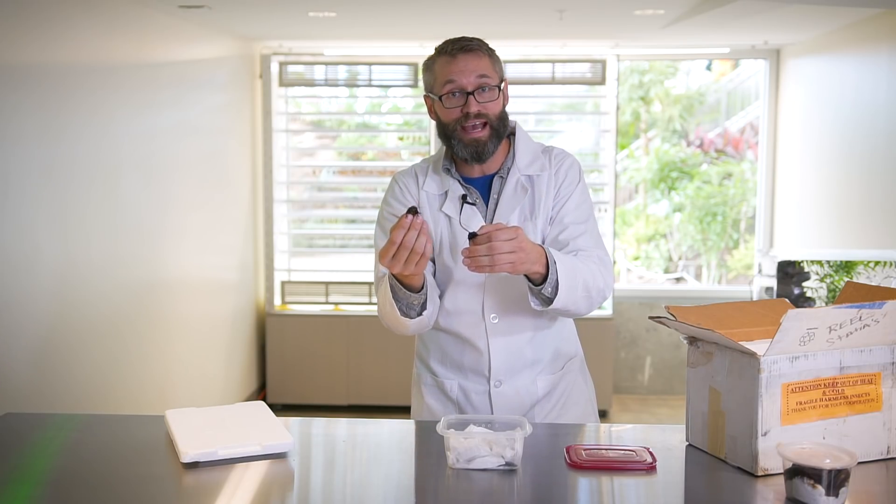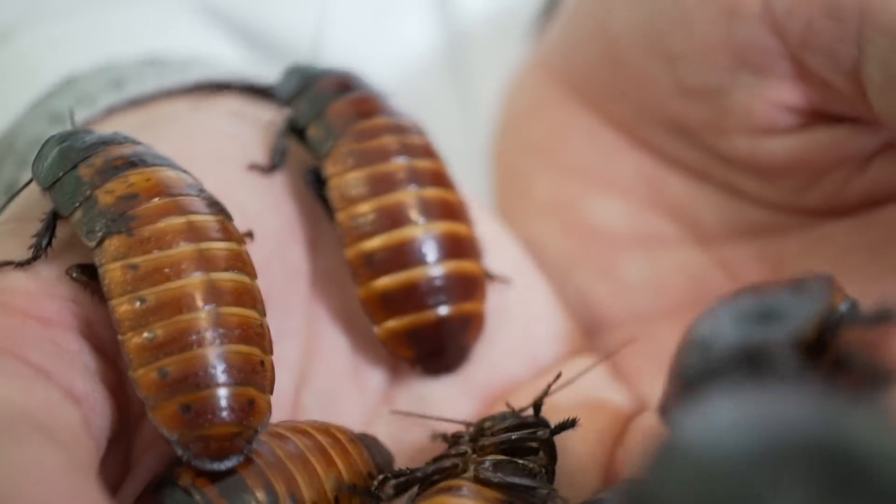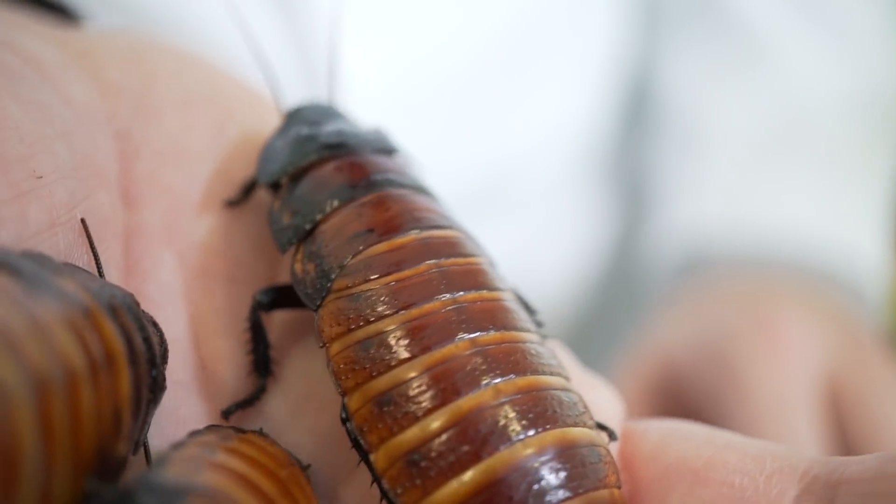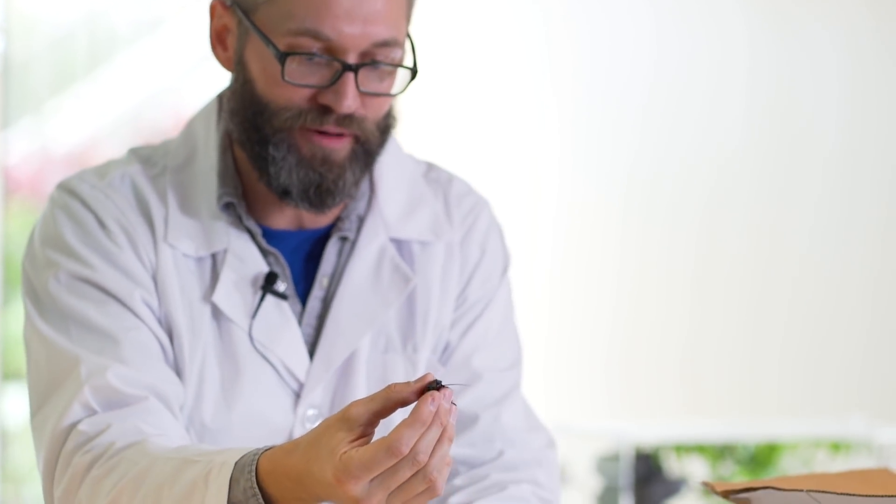Now the reason these guys are called Madagascar hissing cockroaches is because they come from Madagascar and they actually do hiss. It's not like a cicada that vibrates a little thing on their body and it's not like a cricket that rubs their wings together. They actually hiss out air like that. Let's see if we can get one to make a noise.